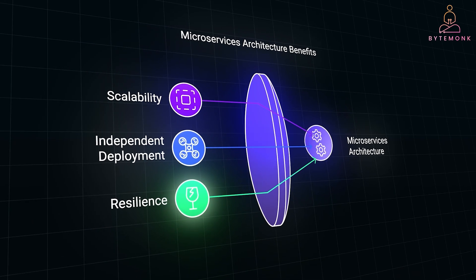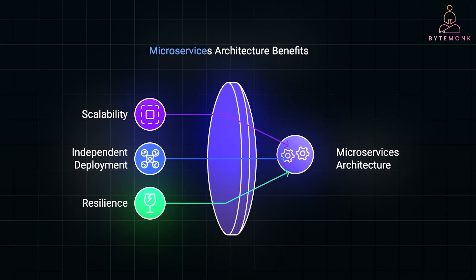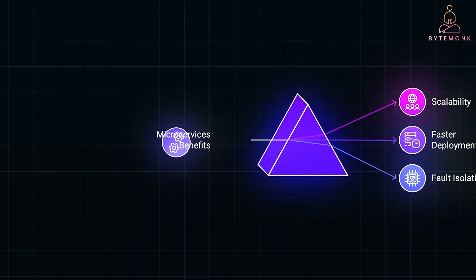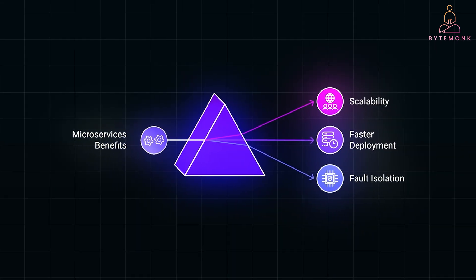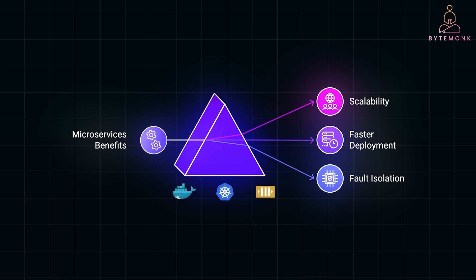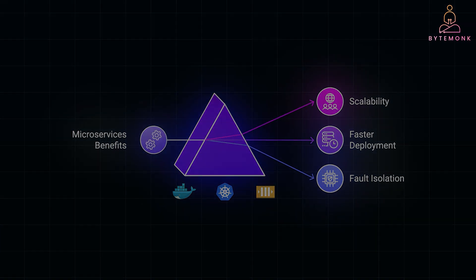Microservices can also improve the resilience of the application. If the inventory management service experiences downtime, the reservation system will continue functioning. In conclusion, microservices help solve the problems that come with managing complex, growing applications — they make scaling, deployment, and fault isolation easier. But they also introduce new challenges around management and debugging. With the right tools like Docker, Kubernetes, and messaging queues, you can effectively manage microservices-based systems. If you are interested in learning more about microservices, containers, or cloud architecture, make sure to check out my other videos.